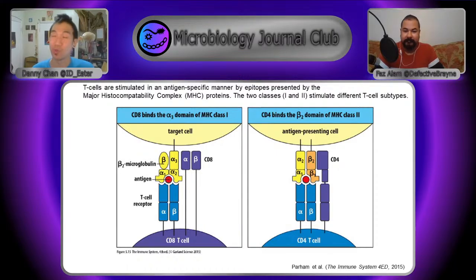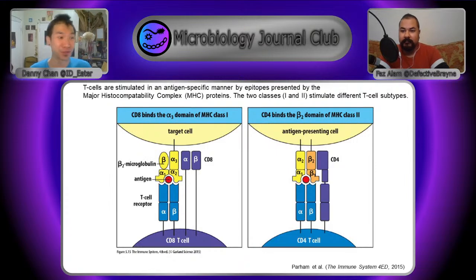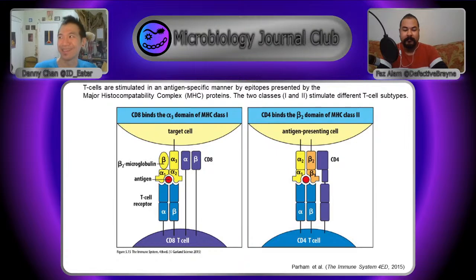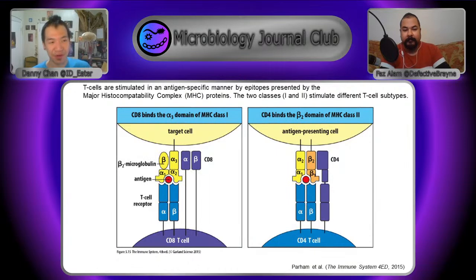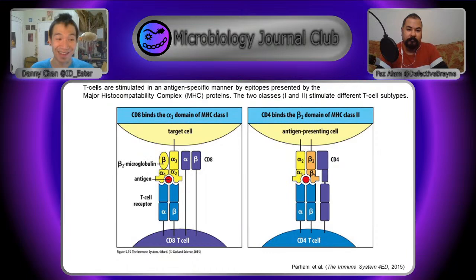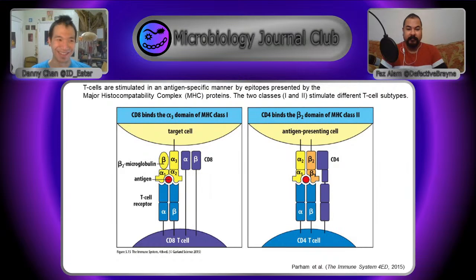This is a simplification — the immune system is super complicated with a lot of crosstalk between these systems, like antibody production feeding back into other things. People are discovering new stuff all the time. Another important molecule is the T-cell receptor, which is on the other side — that's the receptor recognizing the antigen being presented on the MHC.